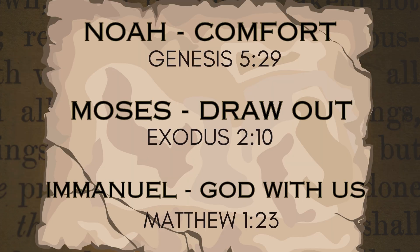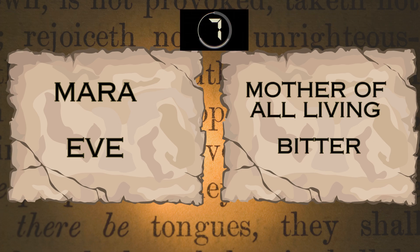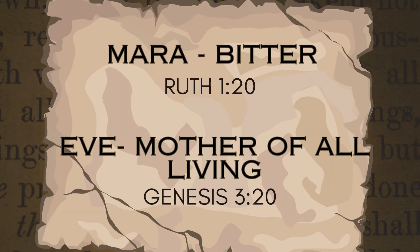Noah's father gave him the name meaning 'comfort.' Pharaoh's daughter drew Moses out of the Nile, and the name Emmanuel fulfilled a prophecy. Match the meaning of the names Mara and Eve — 50% chance you were going to get it right, and we hope you did.